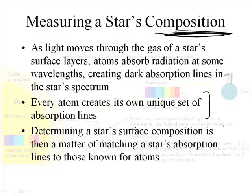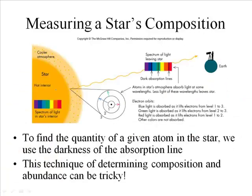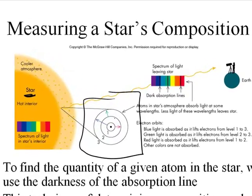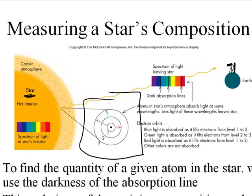We did a spectroscopy lab, so hopefully this will make sense. And it determines a star's surface composition, and it's then a matter of matching a star's absorption lines to those of known atoms. Write that down, but let me just show you a picture. It'll make a lot more sense. So if I have a star, not necessarily our star, any star, and then there are atoms in the star. And this is a picture of the atoms in the electron orbitals.